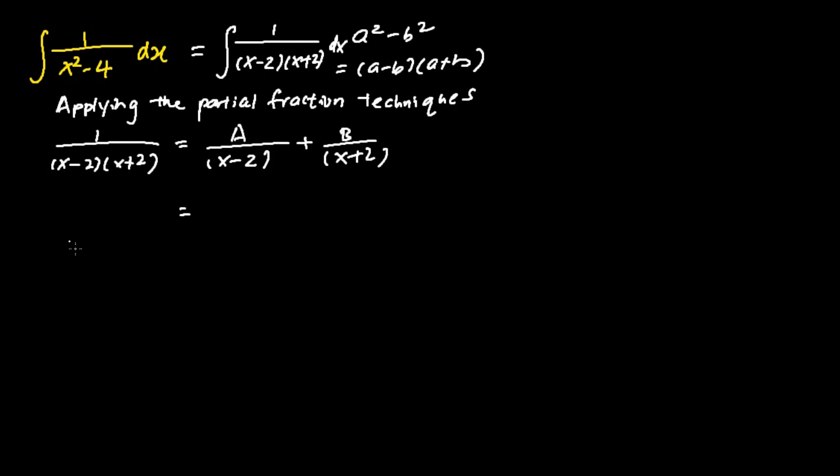We multiply both sides by (x minus 2)(x plus 2). On the left hand side we have 1, and on the right hand side we have A(x plus 2) plus B(x minus 2).